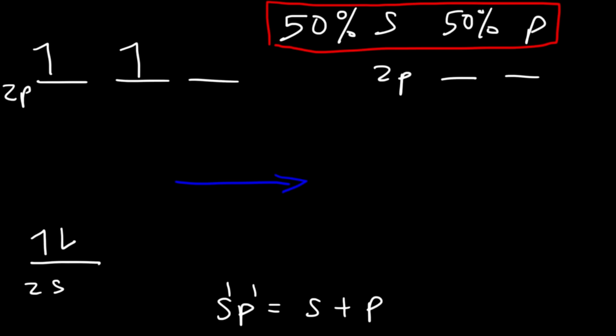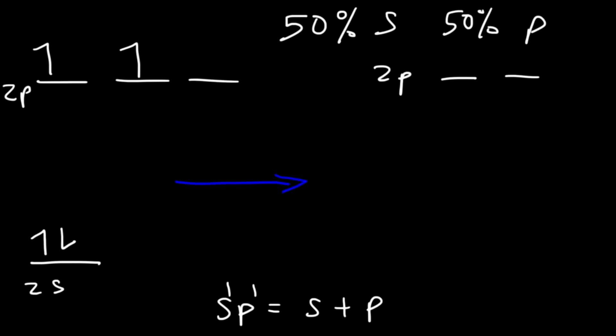There are two sp hybrid orbitals. Since we use one s and one p orbital — two atomic orbitals total — we get two hybrid orbitals. The rule is: if you mix three atomic orbitals you get three hybrid orbitals, if you mix four you get four. Mixing two gives two hybrid orbitals, and they will have the same energy.